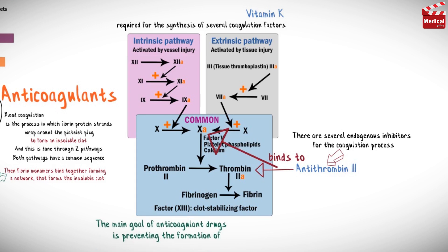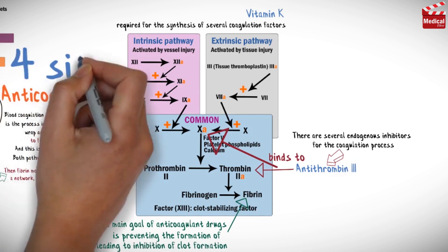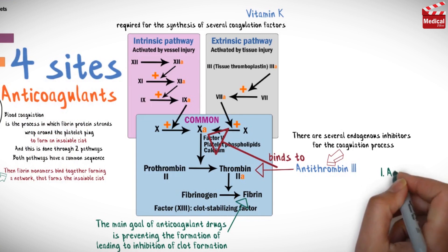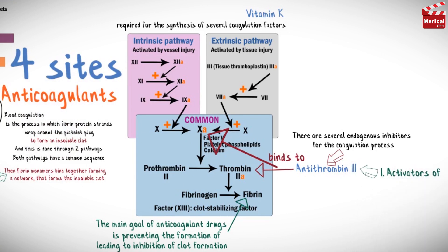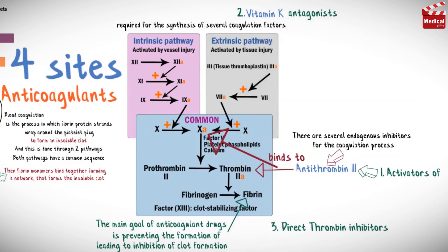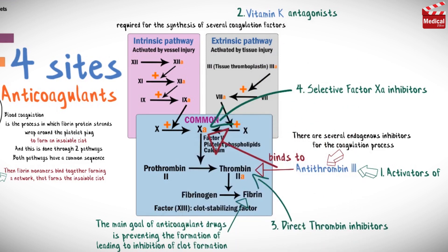The main goal of anticoagulant drugs is preventing the formation of fibrin, leading to inhibition of clot formation. There are four main sites that drugs can act on and inhibit or activate according to their action: activators of antithrombin 3, vitamin K antagonists, direct thrombin inhibitors, and selective factor XA inhibitors.